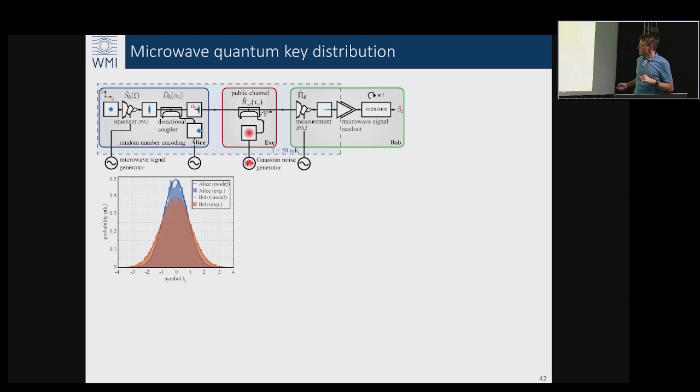Blue here is the distribution which Alice had, which she encoded in the quantum states, and red is what Bob has received and measured. The important thing is that there are solid lines which are models - these are not the fits, these are the predictions of our theoretical model which has zero fit parameters, and the fact that they coincide quite well was very important for us.